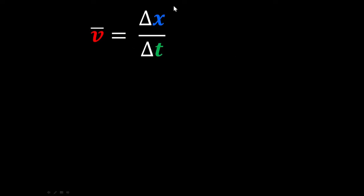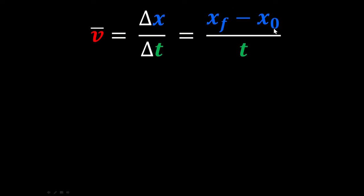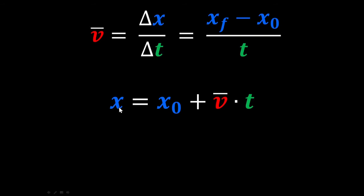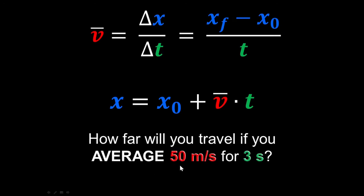We kind of already know that. If we rearrange this equation, knowing velocity and time we can calculate the change in position. Change in position is the final position minus the initial position over the elapsed time. This gives us instantaneous position as just average velocity times time. So it's your standard problem: if you're traveling 50 meters per second for three seconds, you traveled 150 meters. Straightforward.